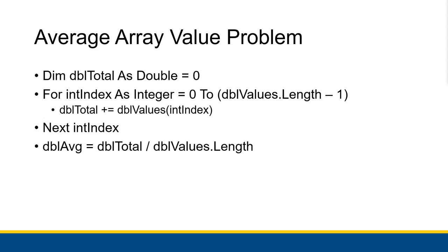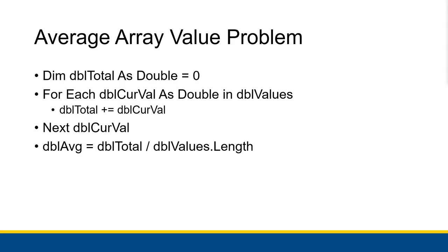Here's the for-loop version: int index goes from zero to the highest subscript, double values dot length minus one or getUpperBound or whatever. Adding to double total is the same, and the calculation of double average is also the same. And of course the for-each version completely gets rid of the index — I just say for each double current value in double values, I add that to the total and then everything else is the same.